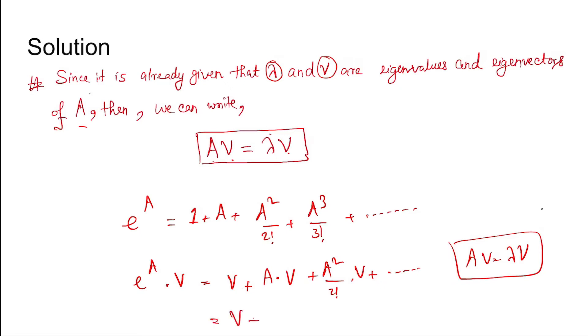Putting lambda here, V plus lambda V plus lambda square by 2 factorial into V and so on, which becomes equal to V times E to the power lambda.